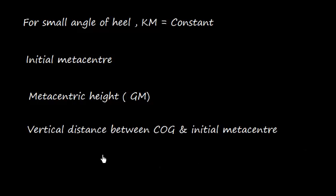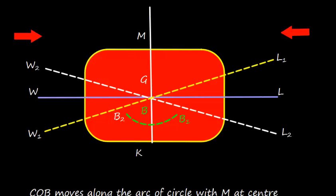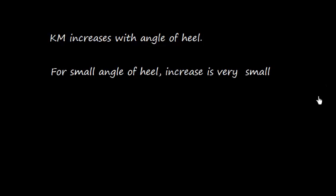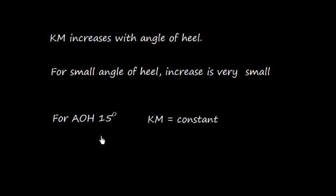GM is the metacentric height — the vertical distance between the center of gravity and the initial metacenter. KM denotes the height of the metacenter from the keel, measured in meters. Although the value of KM increases with angle of heel, for small angles the increase is very small, and KM can be considered constant up to approximately 15 degrees of heel.